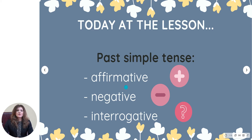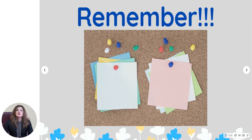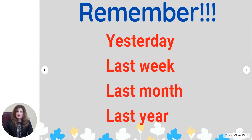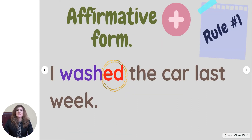We will go through all three forms: the affirmative or positive form, negative or negations, and interrogative questions. If you are ready, take your pens and copy books and make notes. But before we continue, let us remember some time words: yesterday, last week, last month, last year — all these words refer to the past, to something that has already happened.